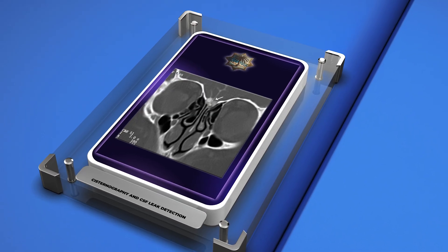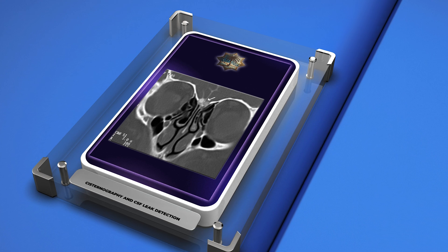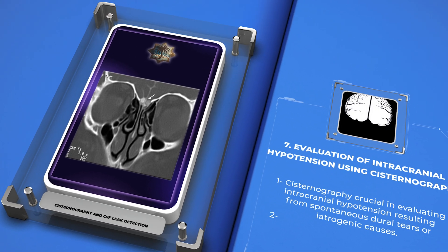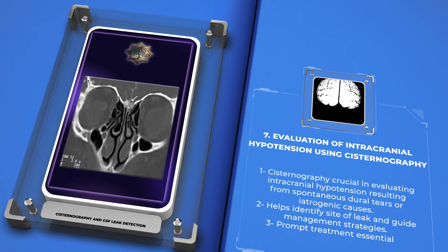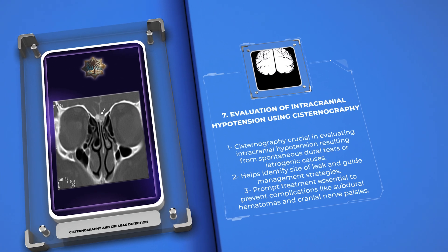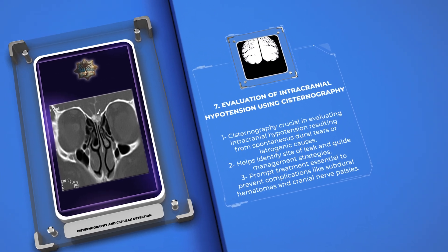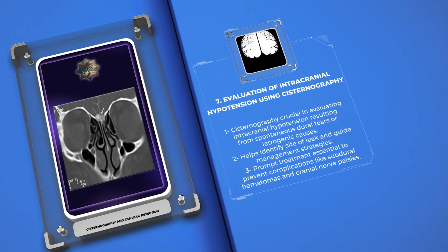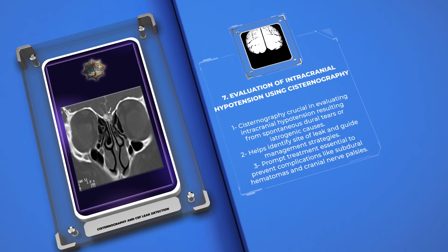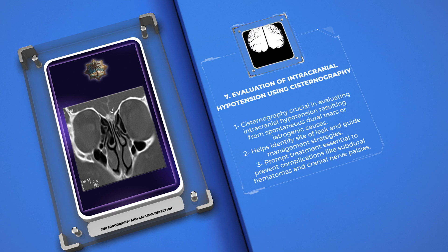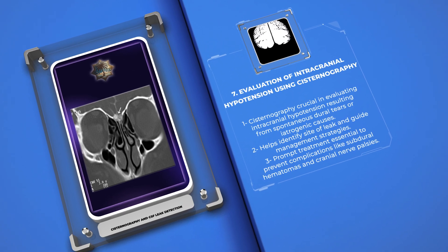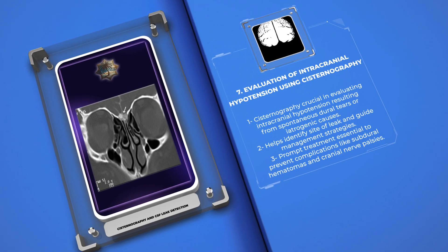Cisternography also plays a crucial role in evaluating intracranial hypotension, which can result from spontaneous dural tears or iatrogenic causes. By visualizing the CSF dynamics, cisternography can help identify the site of the leak and guide appropriate management strategies. Recognition and prompt treatment of intracranial hypotension are crucial to prevent complications like subdural hematomas and cranial nerve palsies.